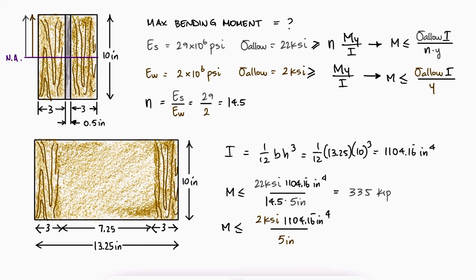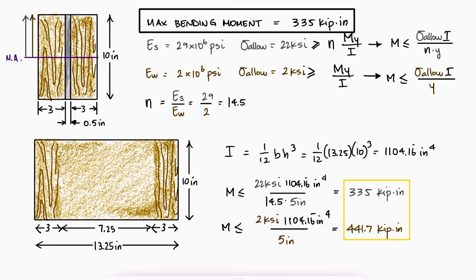By substituting the maximum allowable stresses and that E ratio, we find that the moment should not exceed 335 kip inches. Anything larger than 335 would cause a stress in the steel larger than its maximum allowable stress, even somewhere in between 335 and 441.